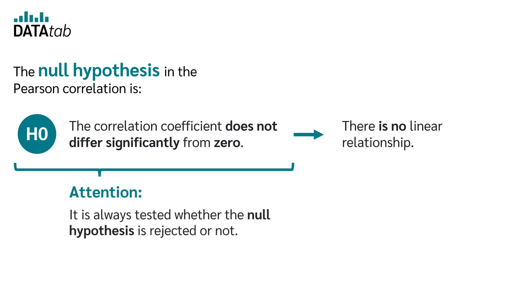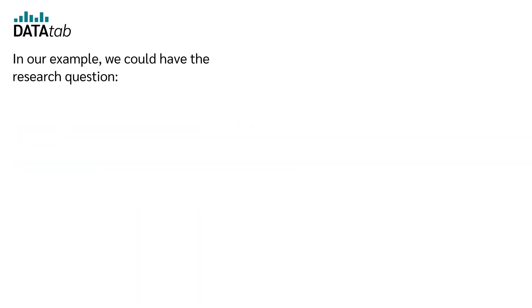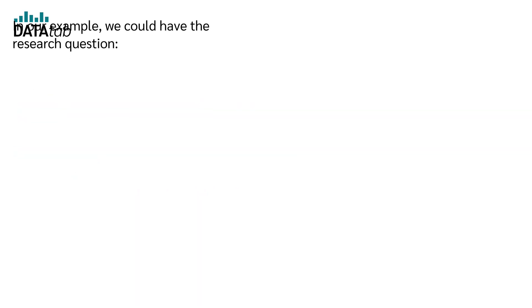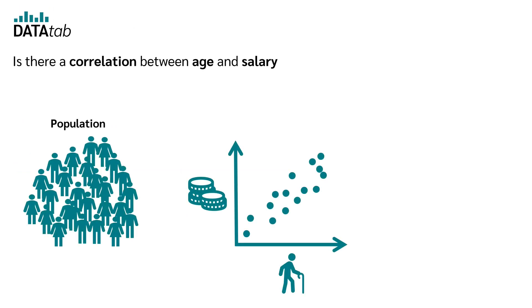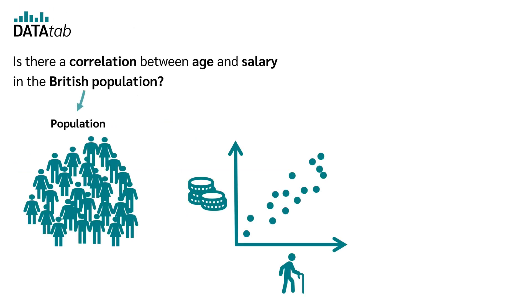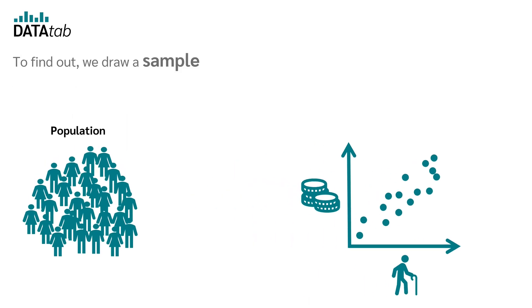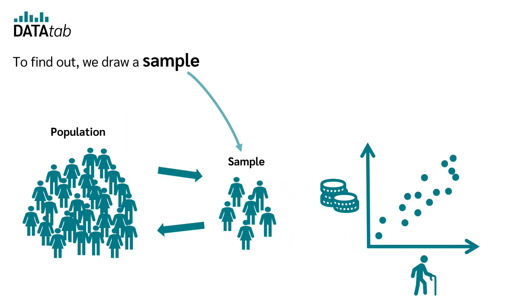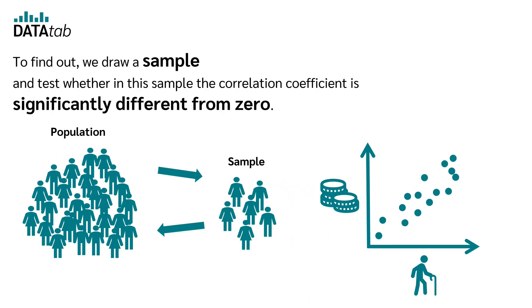Attention! It is always tested whether the null hypothesis is rejected or not. In our example, we could have the research question: is there a correlation between age and salary in the British population? To find out, we draw a sample and test whether in this sample the correlation coefficient is significantly different from zero.